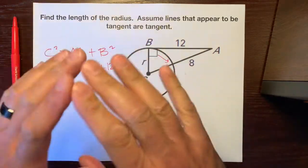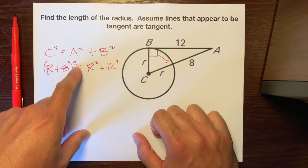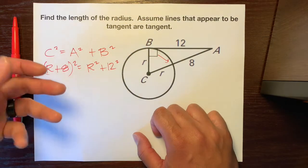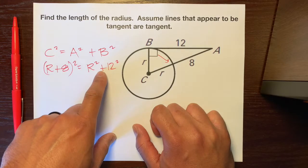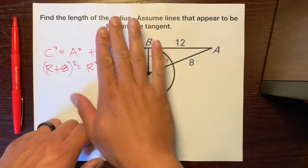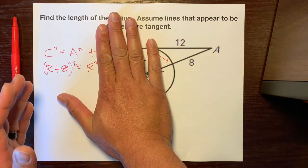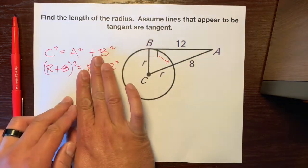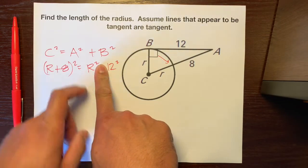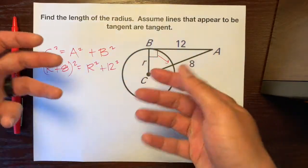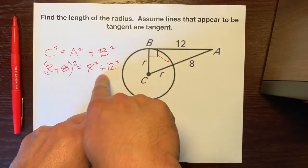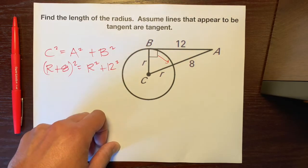Some of you may see there's a square here, a square here, and a square here, so you might want to just square root both sides. However, that breaks some algebra rules, because there's a plus sign here. We can't square root both sides to get rid of all these squares. If it was just r squared and this, or just this and this, or if there was no plus sign — like r squared times 12 squared — then we could square root both sides. But this plus sign says nope, you cannot square root both sides.